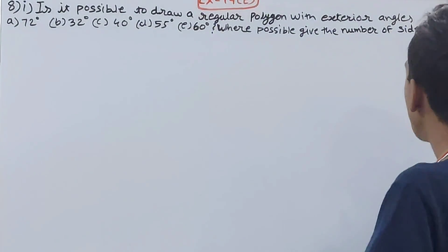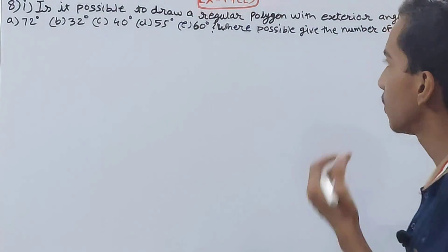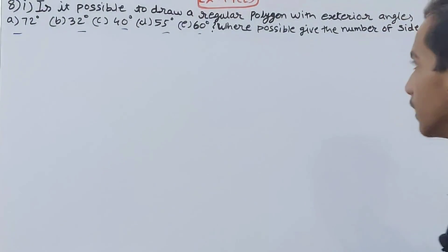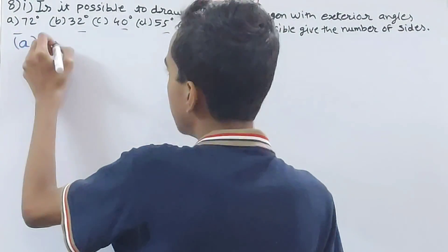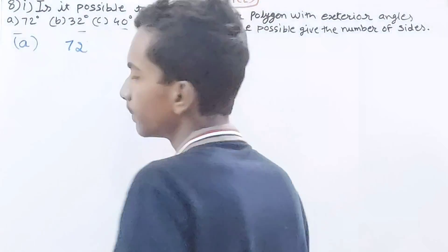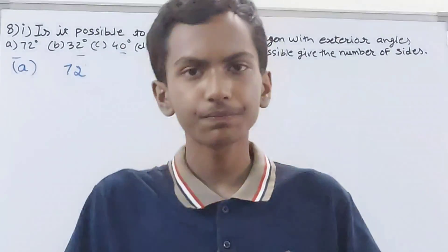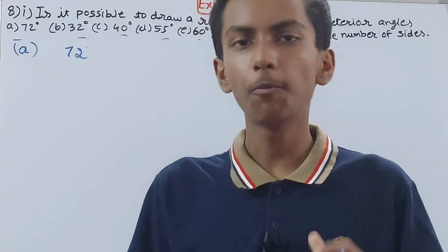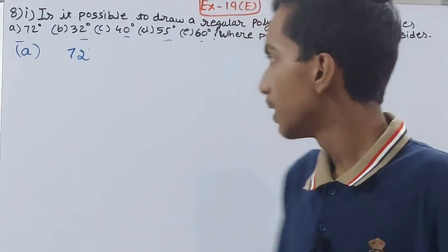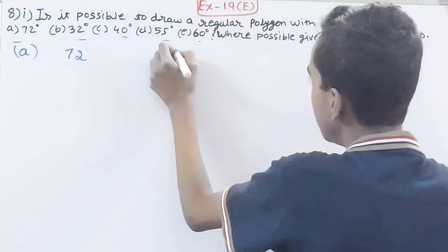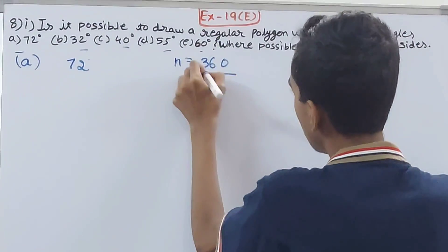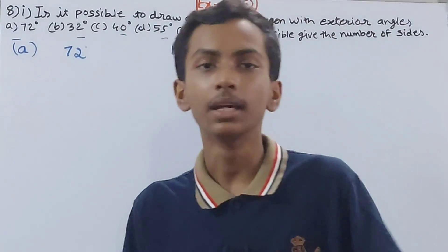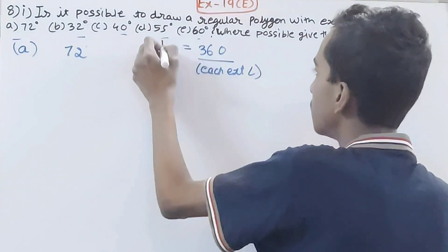We have parts a, b, c, d, and e. We have to tell yes or no if we can make a polygon with these exterior angles. The formula we will use is: number of sides n is equal to 360 divided by the measure of one exterior angle. This is the formula we will be using throughout the entire question.